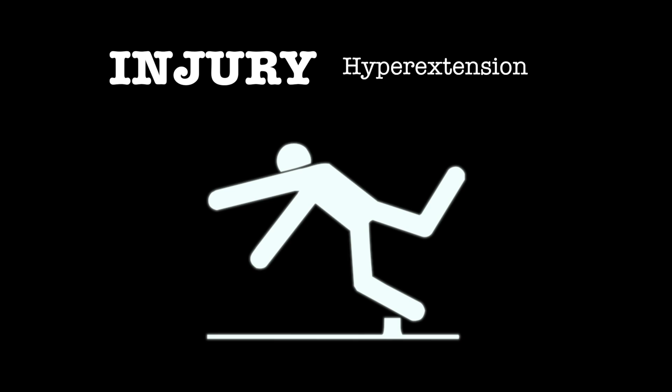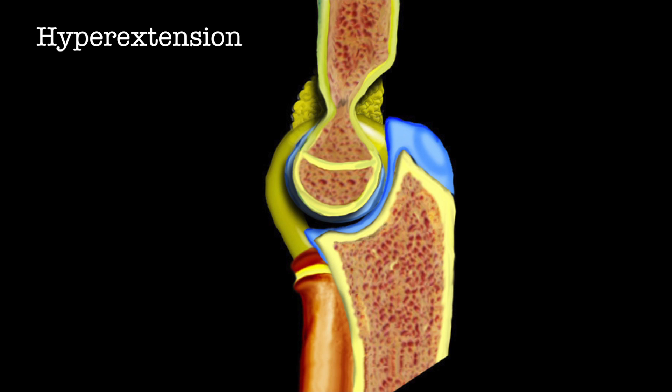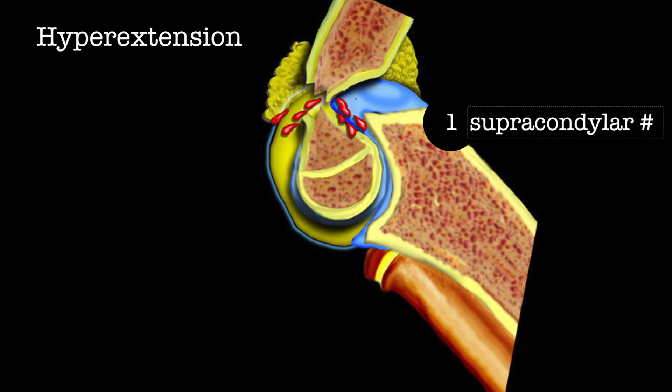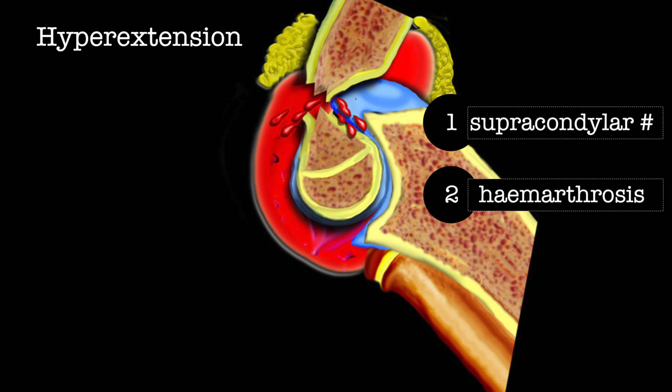Injury is usually due to hyperextension, which occurs when one falls on an outstretched arm. During hyperextension, two things happen: there is a supracondylar fracture and a hemarthrosis that forms. This displaces the fat pads — the anterior fat pad displaces superiorly and the posterior fat pad displaces posteriorly.